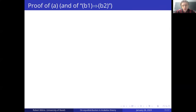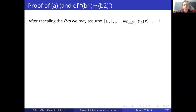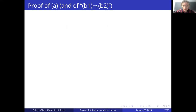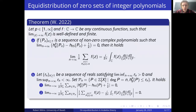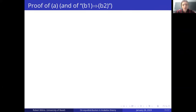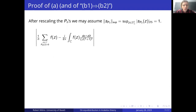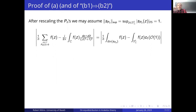I want to prove assertion A, and the proof will also show how to go from B1 to B2 — it's the same strategy. The proof of A is that we can first rescale the polynomials such that the supremum norm of S(P_n) over the complex points is exactly one — just multiply by some constant. These are complex polynomials so there are no integrality constraints. Then we want to bound the absolute value of the difference of the average of F on zeros versus the integral with respect to the Fubini-Study measure.